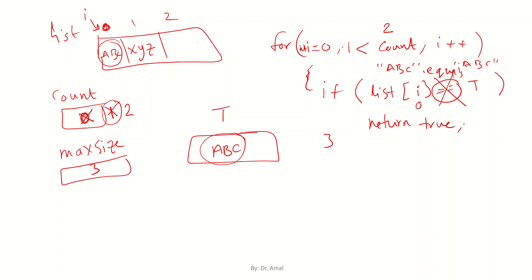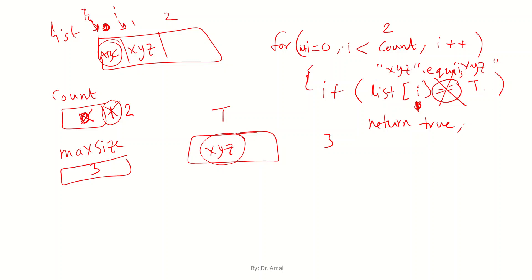Now assume we are looking for 'xyz', which is the second element. Starting from i equals 0, we check list[0] which is 'abc' — it is not equal to 'xyz', so we move on. i increments to 1, and we check list[1] which is 'xyz'. It is the same as t, so we found t at location 1 and we return true, exiting the method.